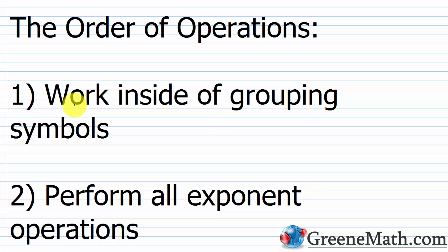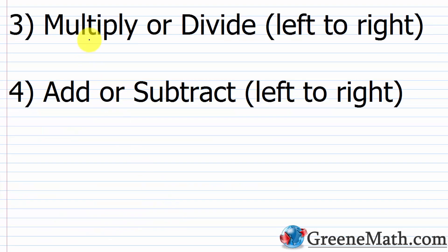The first thing you're going to do is work inside of grouping symbols — generally parentheses or brackets. Then you're going to perform all exponent operations. Then multiply or divide from left to right. Then add or subtract, again from left to right.